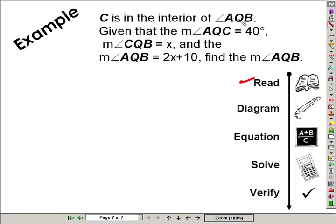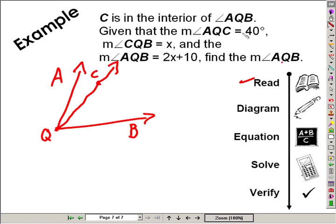C is in the interior of angle AQB. Now, putting in the given information, AQC is 40 degrees. AQC 40 degrees. Now mine doesn't look like 40 degrees, but it's just a relative thing. This angle is 40 degrees.